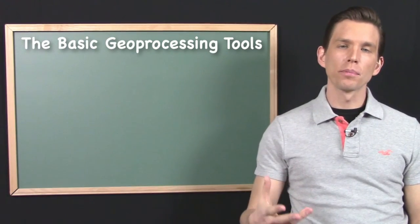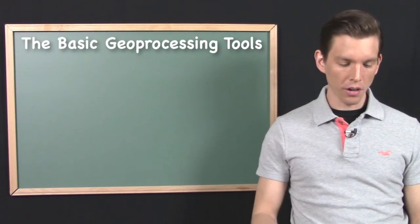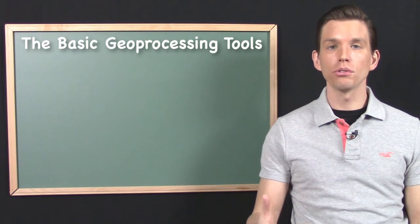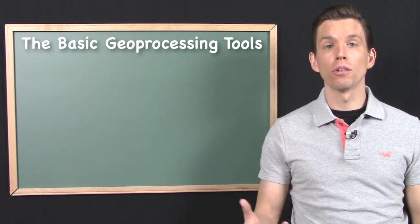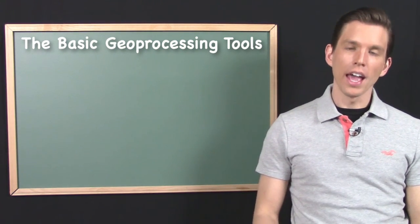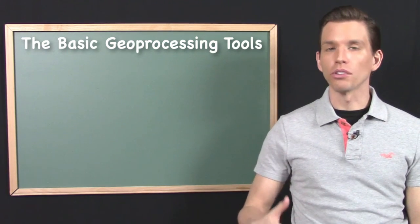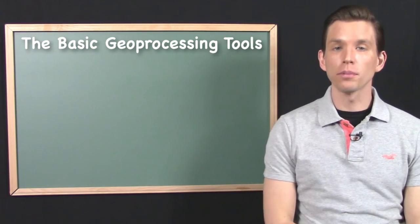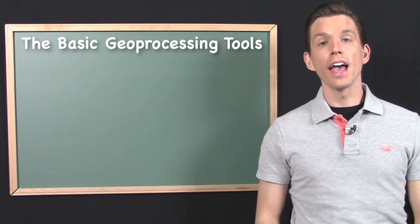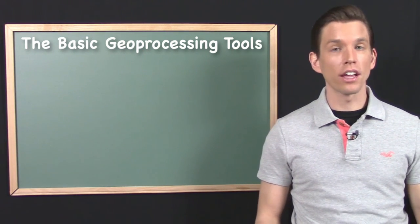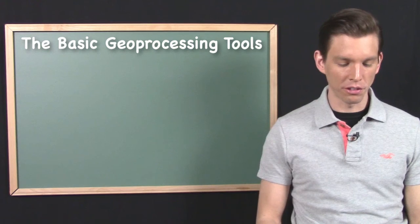So the last category of operations or tools that I want to talk about within the Core GIS Toolkit are the geoprocessing operations and basic geoprocessing tools. And these tools are an incredibly important part of the Vector GIS Toolkit, and in many ways you might even say that they are the core of the core of the toolkit.